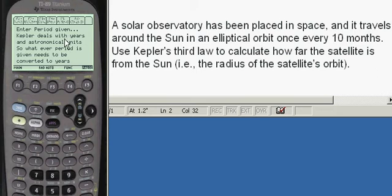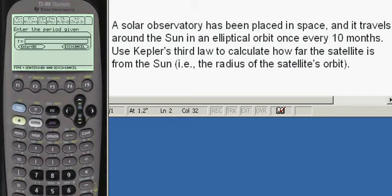Remember that Kepler's Third Law deals with years. And the periods need to be in years for it to work. Astronomical units. Enter the period given. The period given is 10, which is going to be alpha, 1, 0.